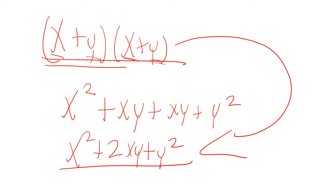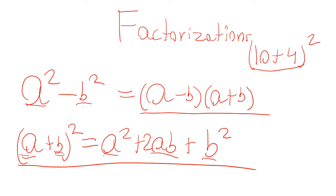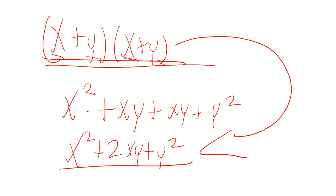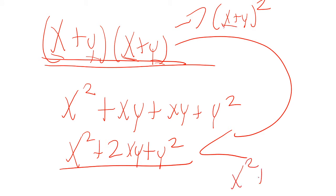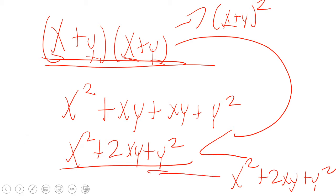This is already the square of a binomial — it can be written as x plus y squared. If we expand that: x squared, product of the terms is xy multiplied by 2 gives 2xy, square of the last term gives plus y squared — the exact same result. This goes for any binomial.